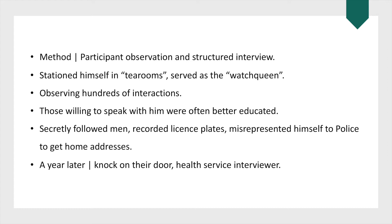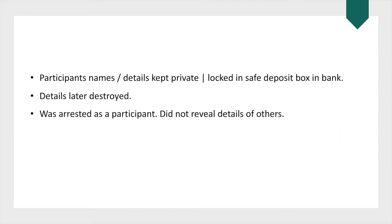To avoid bias, Humphreys secretly followed some of the other men he had observed and recorded the license numbers of their cars. Posing as a market analyst, he convinced the police department to provide him with addresses based on these license plate numbers. A year later, carefully disguised, Humphreys appeared at their homes claiming to be a health service interviewer and interviewed them about their marital status, race, job, and so on. Throughout all of this, he kept the participants' names private, storing them in a confidential safety deposit box at a local bank. On one occasion he was even arrested, and rather than divulge any information that might expose the participants or reveal himself as a researcher, he went through the criminal process and became himself a statistic.